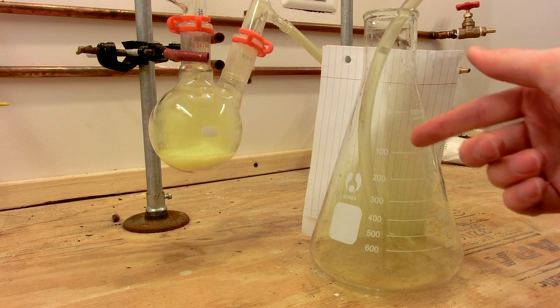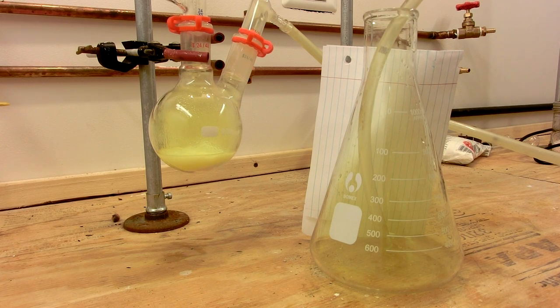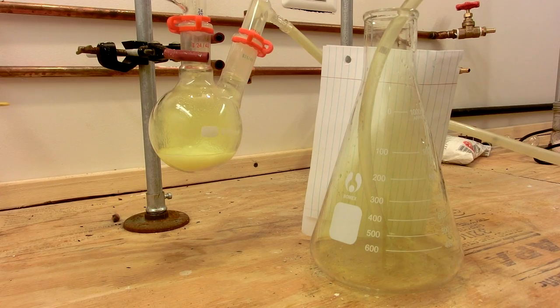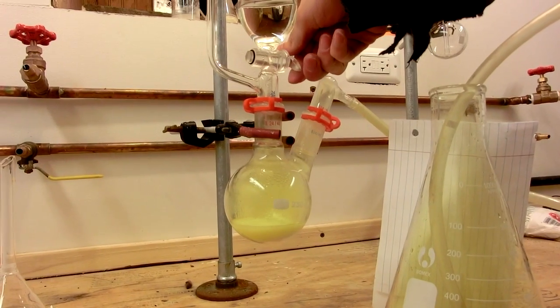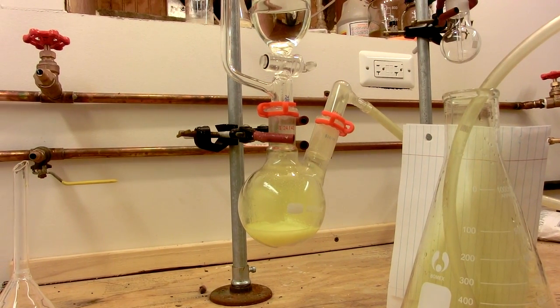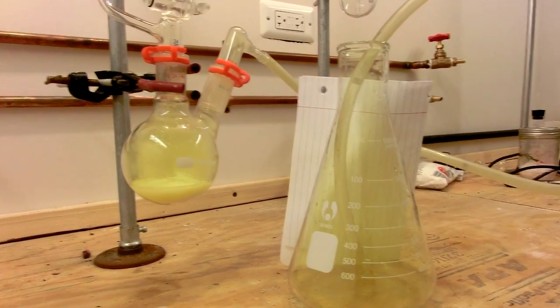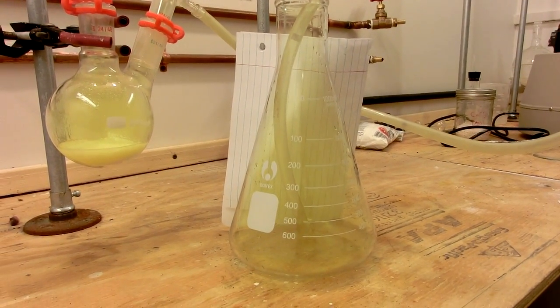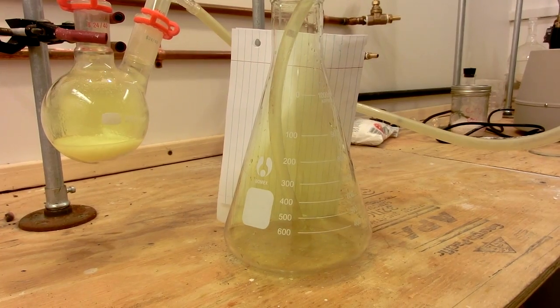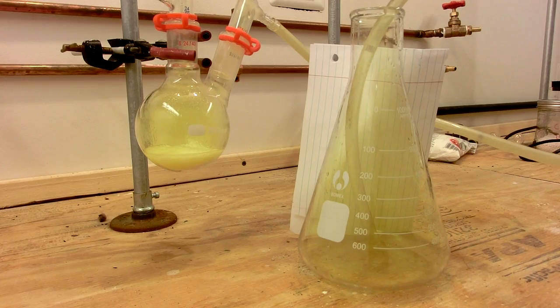And slowly but surely our flask fills with chlorine gas. I think we're just about reaching the top of that flask now, maybe a little longer. I am going to turn off the drip of hydrochloric acid to slow the chlorine generation gradually to a stop. And I will give this a minute to get to equilibrium before taking the tube out of the flask.